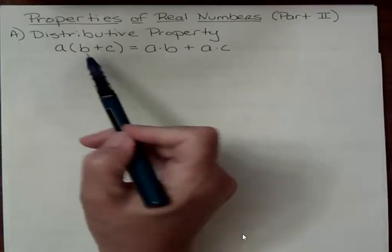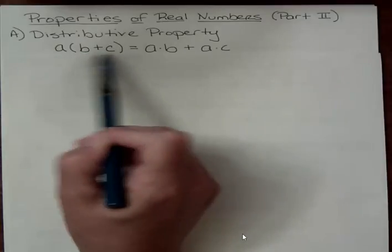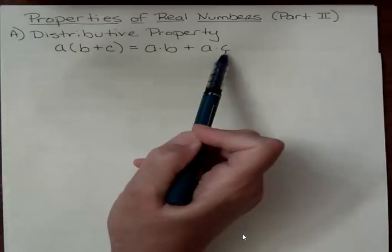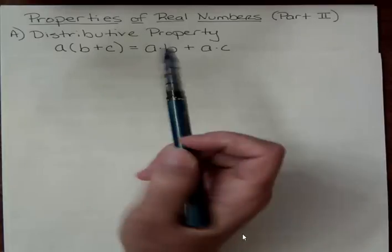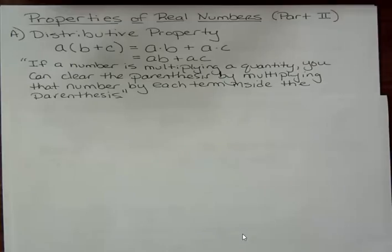That is, if we have a quantity, that's b plus c, that's being multiplied by a number, we can multiply everything inside that quantity by the number on the outside. So a times b plus a times c. If I had a subtraction sign in there, I would have to be concerned about that subtraction sign and making sure I get the sign correct. If a number is multiplying a quantity, you can clear the parentheses by multiplying that number by each term inside the parentheses. That's what the distributive property allows you to do, is to clear the parentheses.